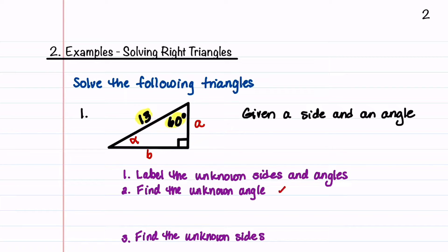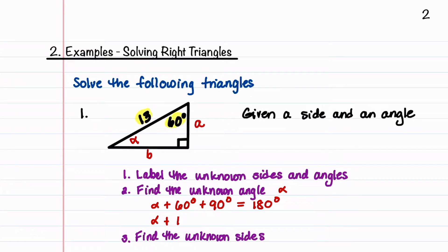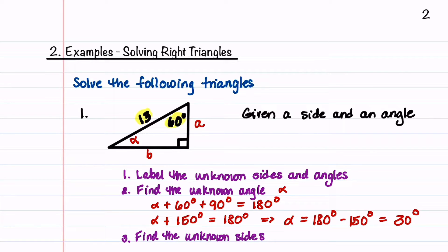Next we find the unknown angle alpha. Using the fact that all three angles must add up to 180 degrees: alpha plus 60 degrees plus 90 degrees equals 180 degrees, so alpha plus 150 degrees equals 180 degrees, which gives us alpha equals 30 degrees.